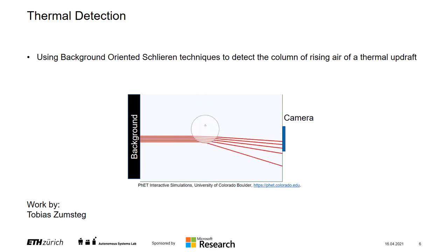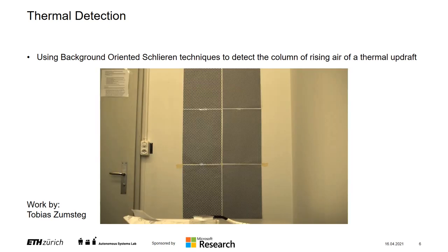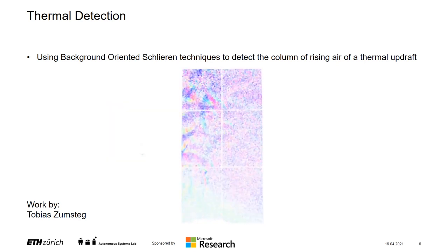Temperature differences in air deflect the light rays resulting in a slightly distorted background image. Using background-oriented Schlieren techniques based on optical flow methods, the invisible flow, as shown here in the optical spectrum, can be made visible.